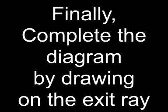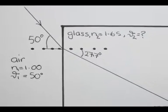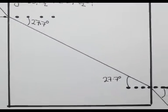Finally, draw the exit ray. And there we have it: the path of a ray of light through a glass block when entering at 50 degrees to the normal.